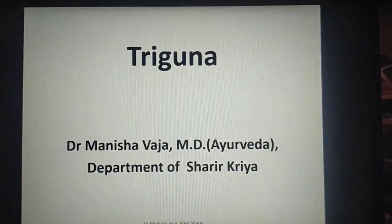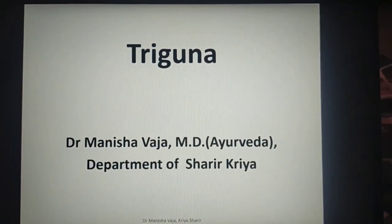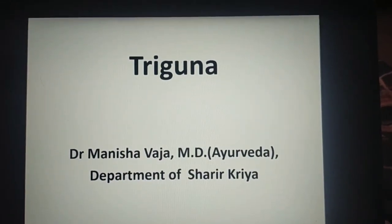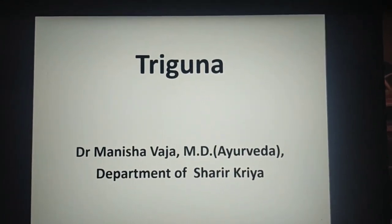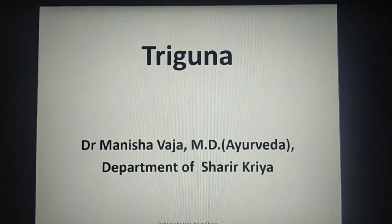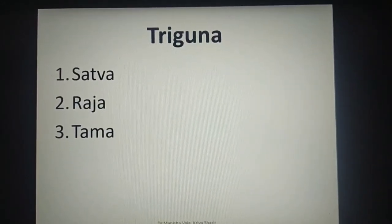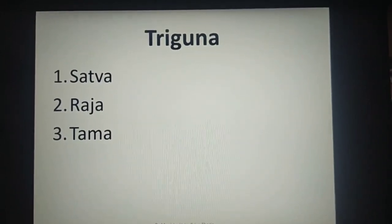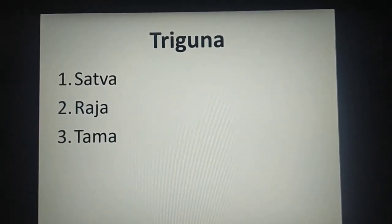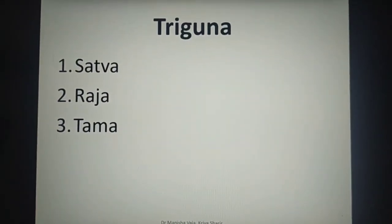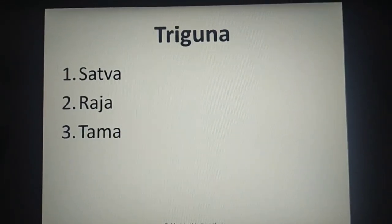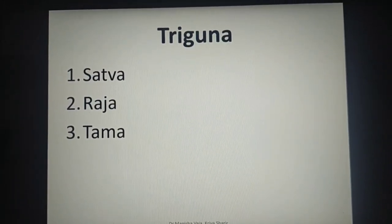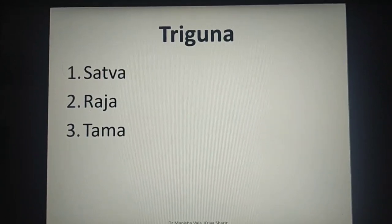Today we are going to talk about our next topic which is Three Gunas. Three means three, and Gunas which are three are Sattva, Rajas, and Tamas. We have to remember that three Gunas are Sattva, Rajas, and Tamas. When we learned about the three Doshas, they were Vata, Pitta, and Kapha, and the three Gunas are Sattva, Rajas, and Tamas.